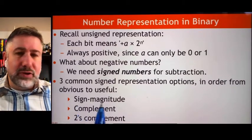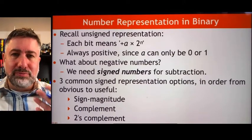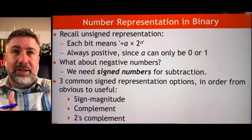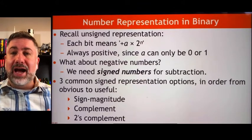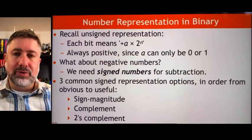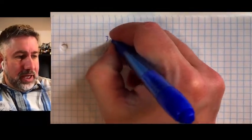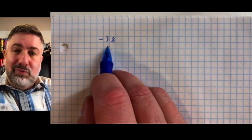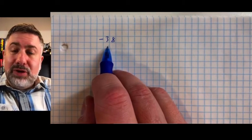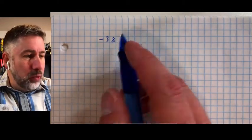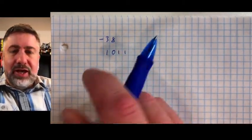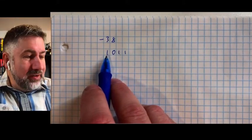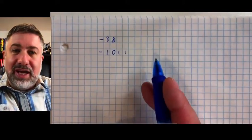The first obvious guess when making a negative number is the same thing we do in base 10: add a new symbol, the negative sign, that causes a number to be negative. If we have a number like 38, we just put a negative symbol there to get negative 38. That works fine in base 10 when there's no problem inventing new symbols. But in base two, we don't have any new symbols — all we have is zero and one — so we can't just put a negative sign in front of a binary number.